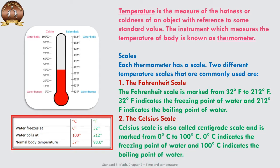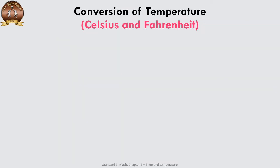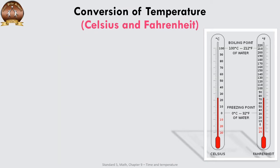Then comes the Celsius scale. The Celsius scale is also called the centigrade scale and is marked from 0°C to 100°C. 0°C indicates the freezing point of water and 100°C indicates the boiling point of water.